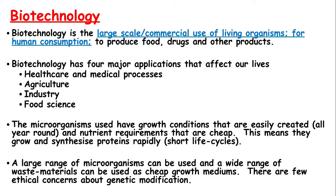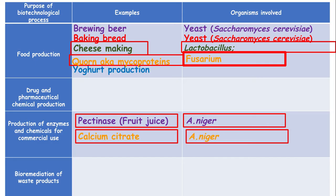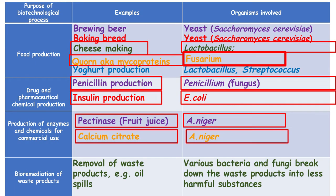A couple of examples: healthcare and medicinal purposes, such as growing and harvesting insulin from genetically modified E. coli; and agriculture, industry, and food science, such as baking and brewing. There are a couple more points that come up later in the advantages and disadvantages. Here's a list of different microorganisms used for different functions and purposes.